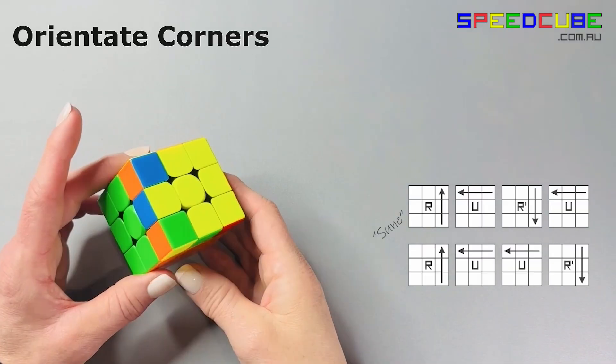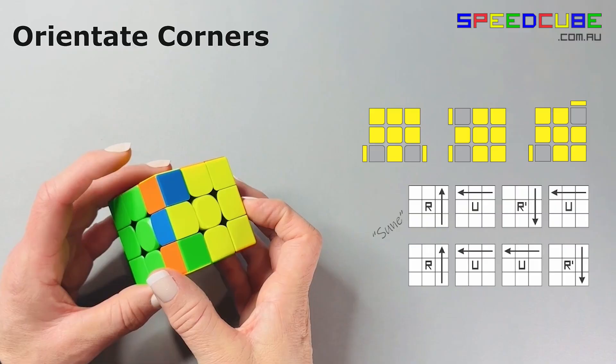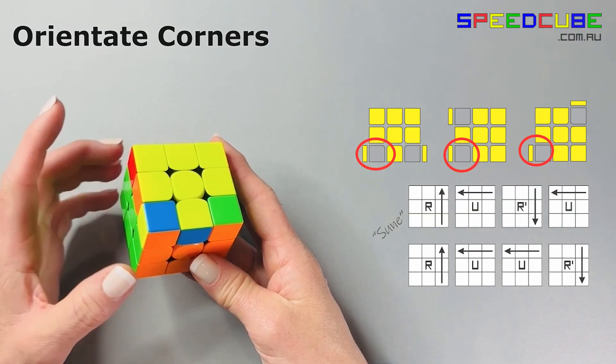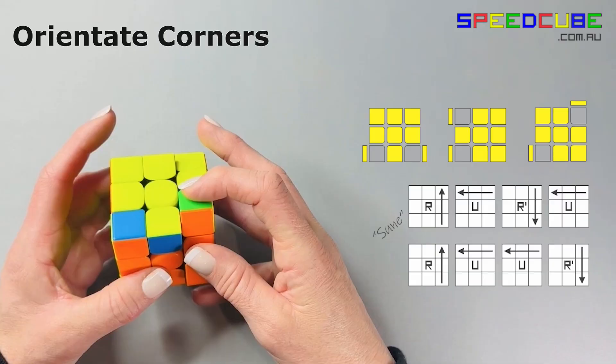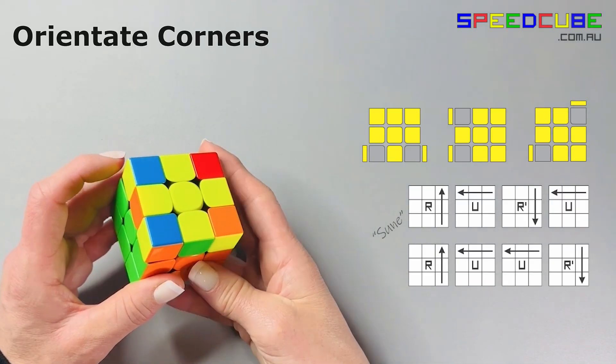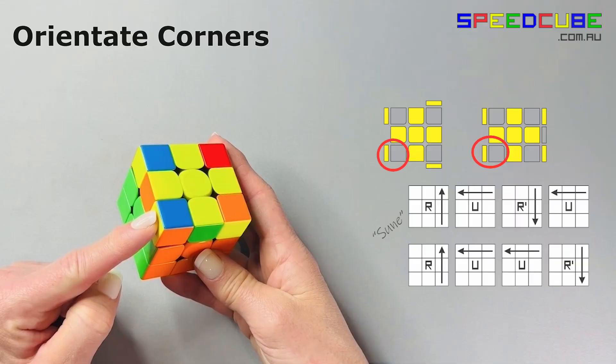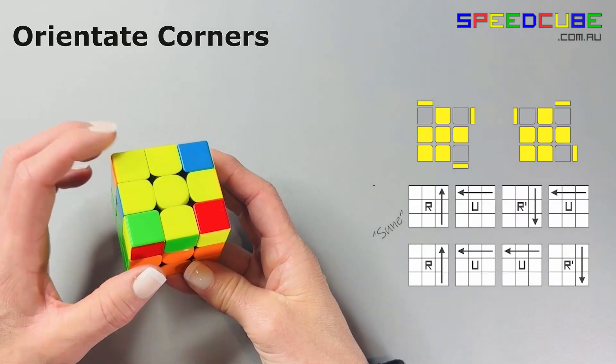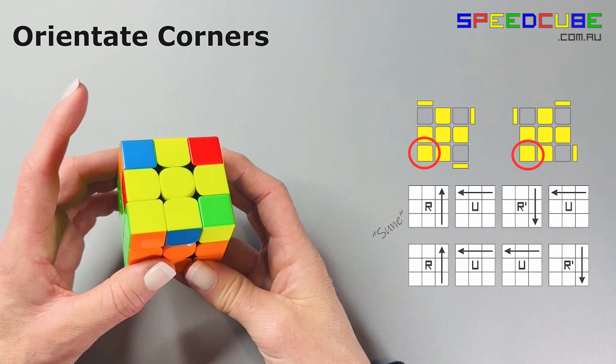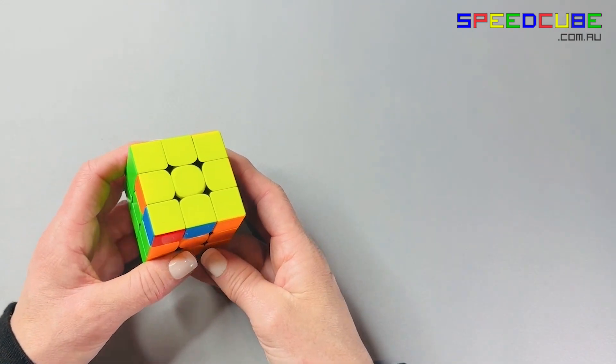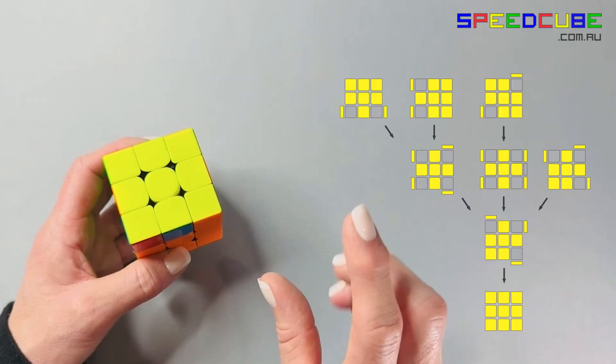I'll show you one more example. We have two corners adjacent to each other facing up. Turn your cube so that you have this yellow sticker on the left.